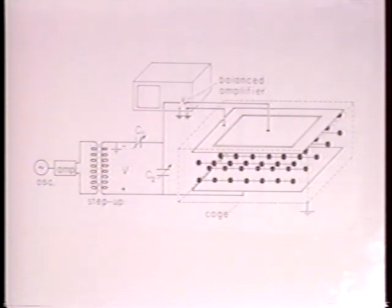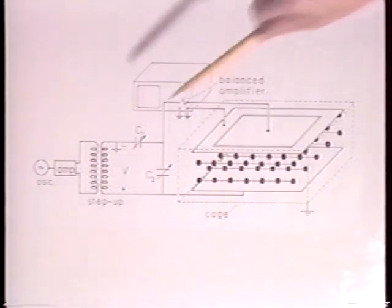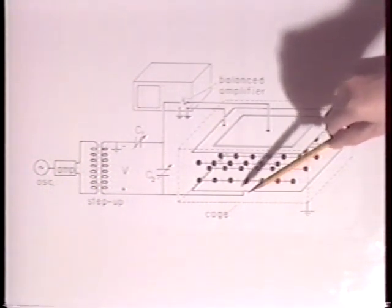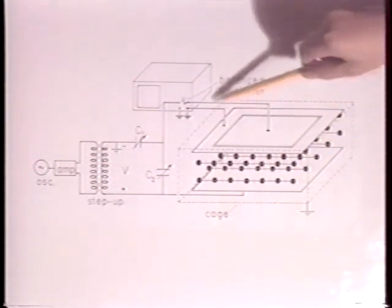This is a picture of the experiment. Here's the transformer driving the lower electrode. Here's the top plate connected to one side of a differential amplifier.